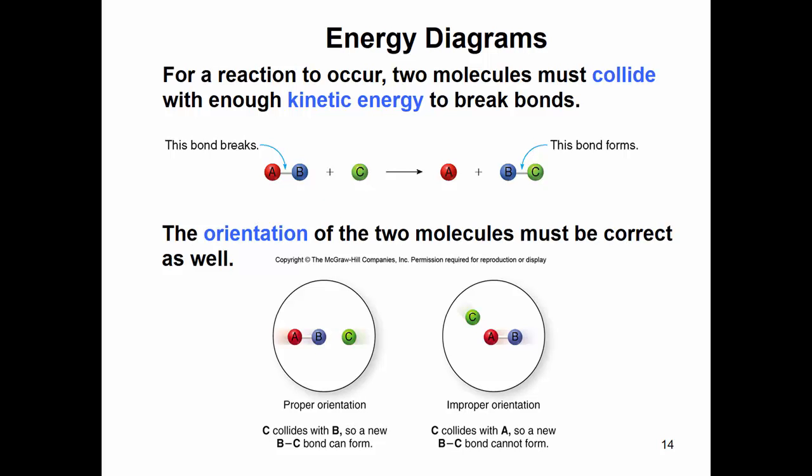The reason for this — your book may not go into this — is that for new bonds to form you have to have orbital overlap, so the molecules have to properly overlap. This is a proper orientation. So molecules have to find each other in the flask and collide with enough energy and in the proper orientation.